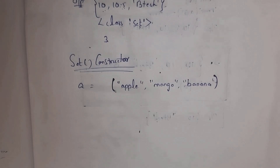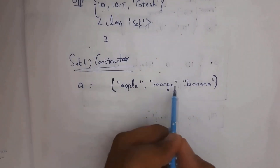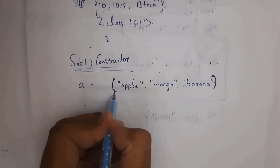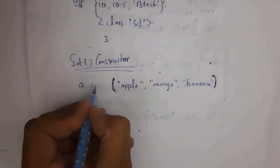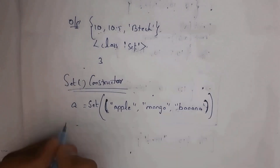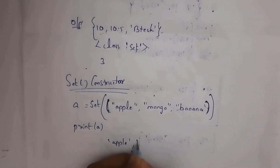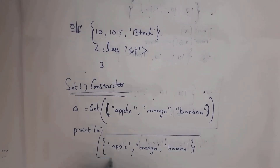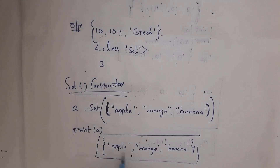Next I will explain the use of the set constructor. For example, here I written a equal to ('apple', 'mango', 'banana') in normal brackets, which represents a tuple. By using the set constructor — just write set() and place the tuple inside — you can convert this tuple to a set. Whenever you write print(a), you will get output apple, mango, banana in curly braces, because we converted the tuple to a set.